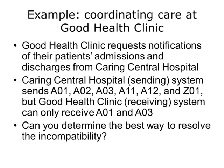Let's look at some examples. Recall Good Health Clinic's request for notifications of their patients' admissions and discharges from Caring Central Hospital. Consider the gaps found in the analysis phase. We determined that the sending system sends A01 for admit, A02 for transfer, A03 for discharge, A11 for cancel admit, A12 for cancel transfer, and Z01 for pediatric admission. But the receiving system can only receive A01 for admit and A03 for discharge. Can you determine the best way to resolve the incompatibility?